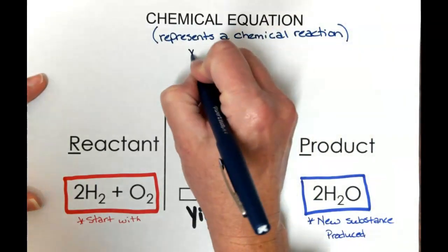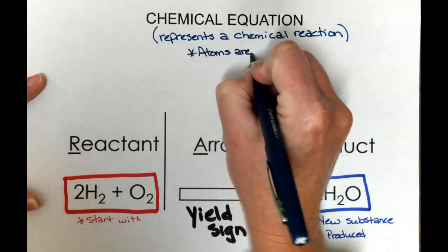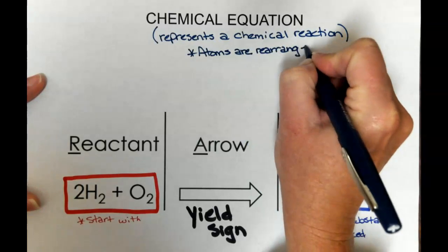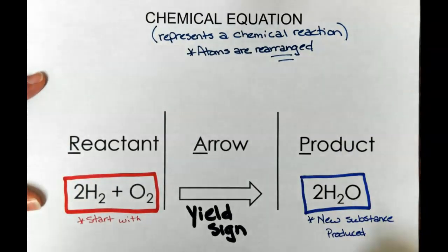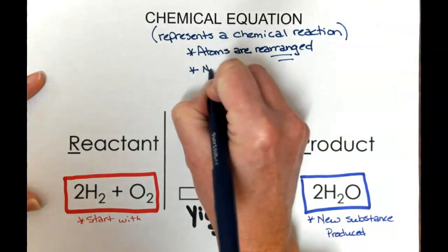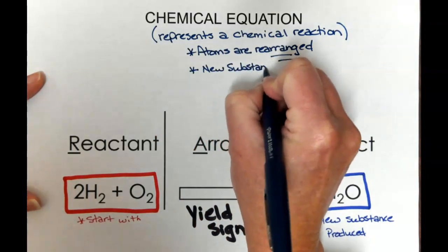So atoms are rearranged. All we do is move them around, rebond them to form a new substance. That keyword there is rearranged. If no new substance is produced, then it is not a chemical reaction. There must be a new substance.